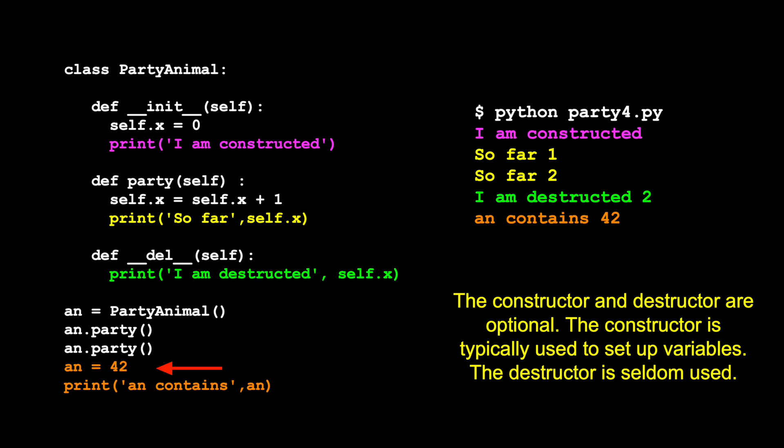We're actually going to destroy this variable by throwing away an, which no longer points at that object. An's going to point to 42. So we're going to sort of overwrite an and put 42 in it. And at that point,